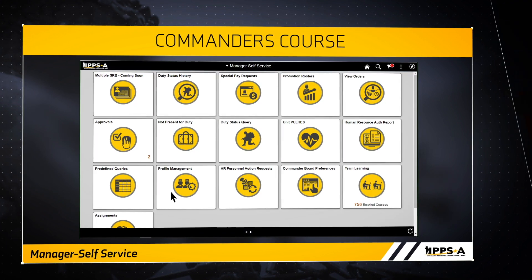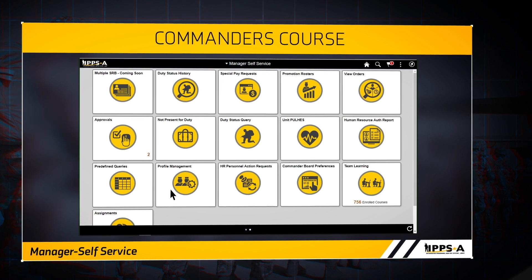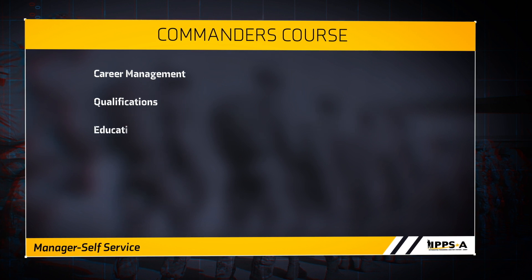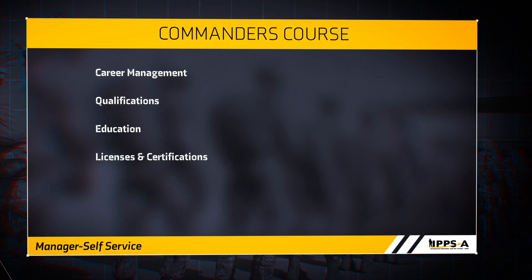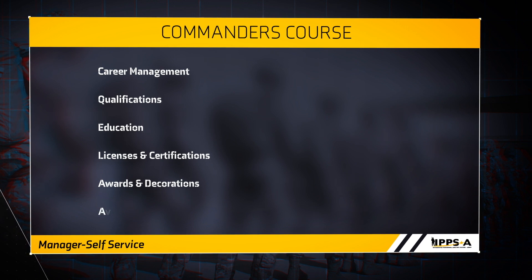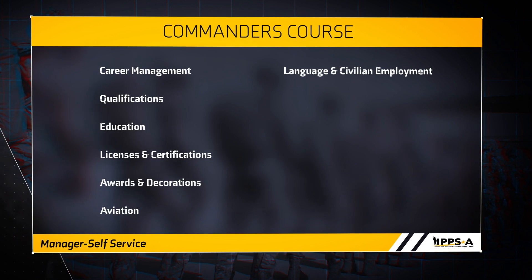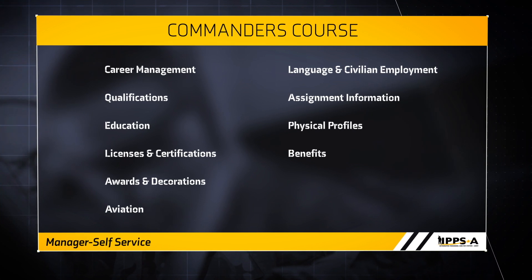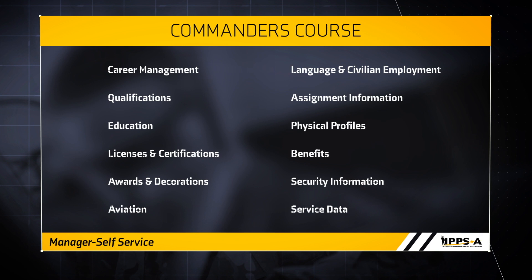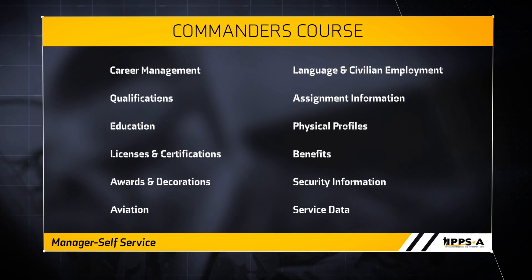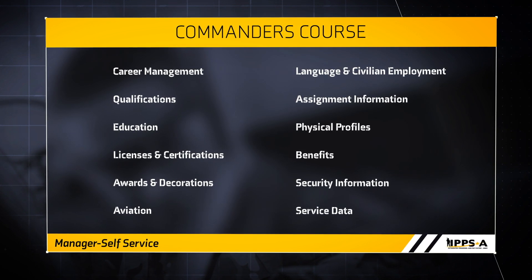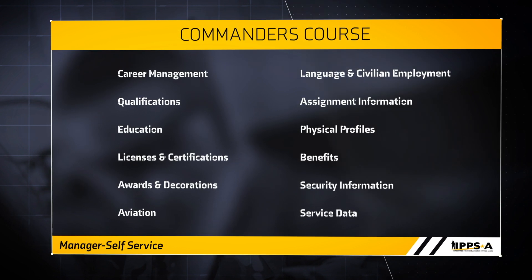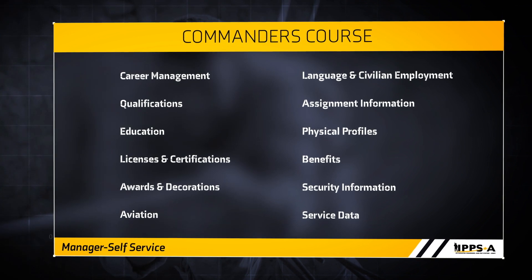In Release 2, 13 tabs within the profiles will be active. These tabs include Career Management, Qualifications, Education, Licenses and Certifications, Awards and Decorations, Aviation, Language and Civilian Employment, Assignment Information, Physical Profiles, Benefits, Security Information, and Service Data. You and your HR professionals have access to view and update select fields within these tabs. As with all areas of IPSA, these updates are auditable and require the proper documents or authoritative data sources.